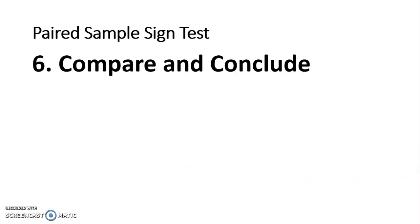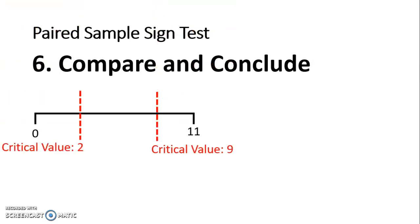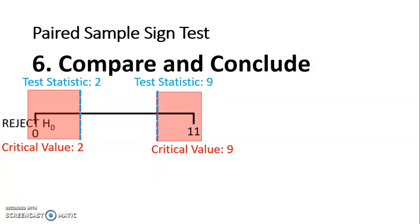So to compare and conclude, if I draw my line from 0 to 11 and I put those two critical values on there, my critical regions are those shaded areas less than or equal to 2 or greater than or equal to 9. And just looking back at my data and my two test statistics that I calculated, they were 2 and 9 as well. So because they lie in that critical region, we are rejecting H0.